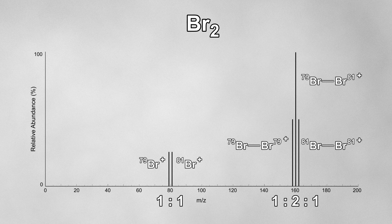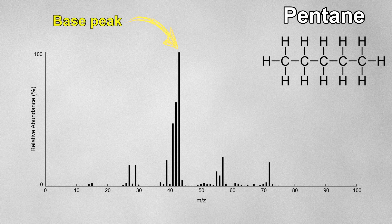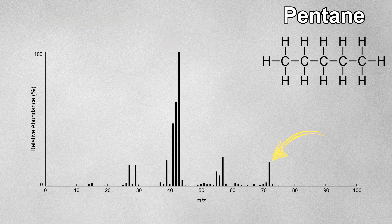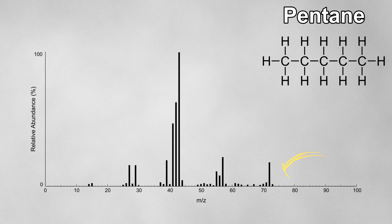Now let's take a look at the mass spectrum for an organic molecule — pentane. There are a lot more peaks here because there are many more ways that the molecule can fragment. This spectrum was taken using electron impact, which is why we see extensive fragmentation. The tallest peak is called the base peak and indicates the most abundant fragment ion; by convention this is set at 100% abundance. The most significant peak at the end is called the molecular ion peak, denoted M+. You might spot a small peak one unit higher than the M+ peak — this is the M+1 peak, due to the presence of carbon-13 in the molecule.